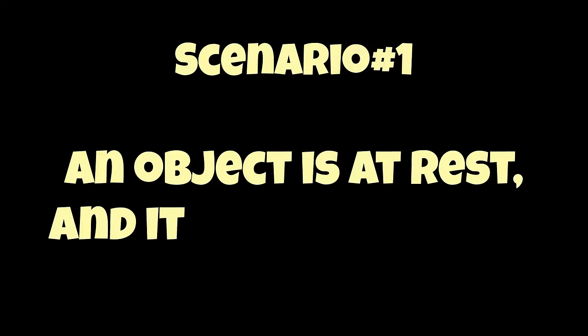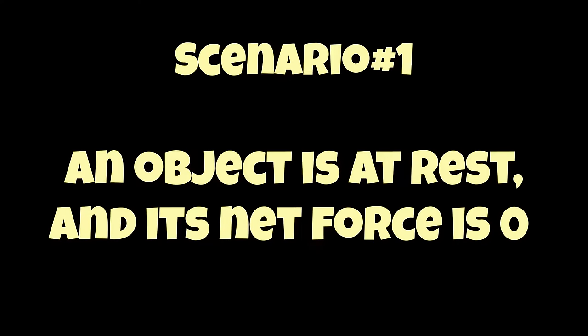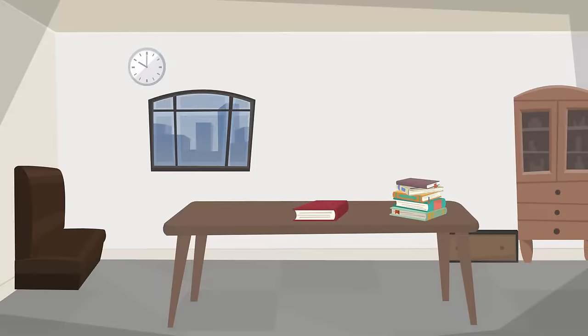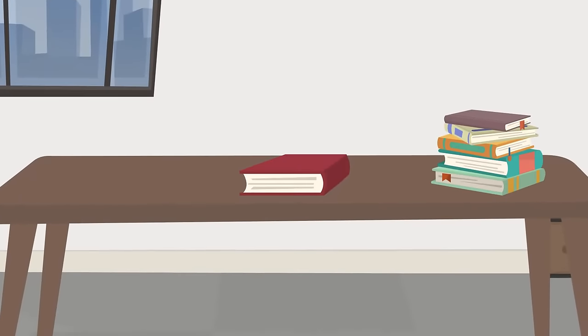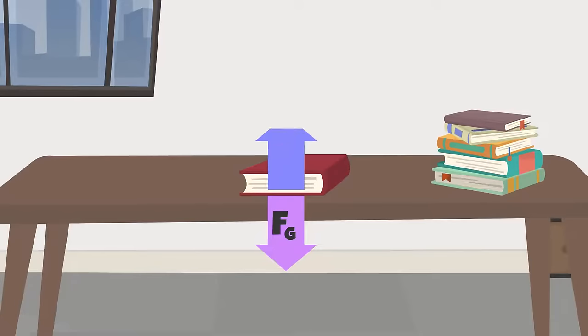Let's look at some scenarios to better understand this. An object is at rest and its net force is zero — for example, a book resting on a table. The force of gravity acting on the book is balanced. Since the net force is zero, the object will continue to stay at rest and not move.